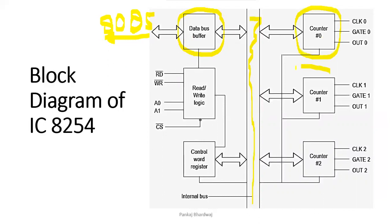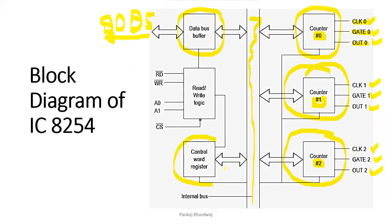There are three counters: counter 0, counter 1, and counter 2. Each counter has three signals — clock, gate, and out. Counter 0 has clock 0, gate 0, and out 0; counter 1 has clock 1, gate 1, and out 1; and counter 2 has clock 2, gate 2, and out 2. These three counters are controlled by a control word register managed by the read/write logic of the 8254.